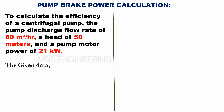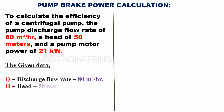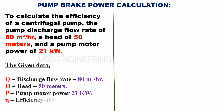The given data: Q, the discharge flow rate, is 80 cubic meters per hour. H, the head, is 50 meters. P, the pump motor power, is 21 kilowatts. Eta is the efficiency of the pump in percent.